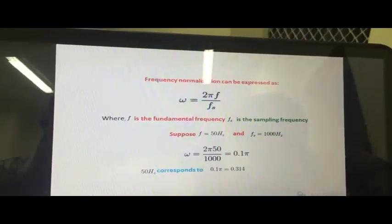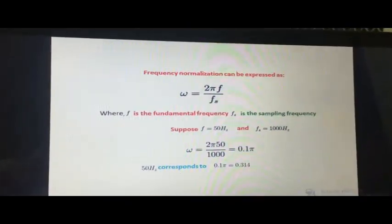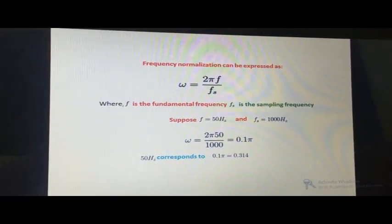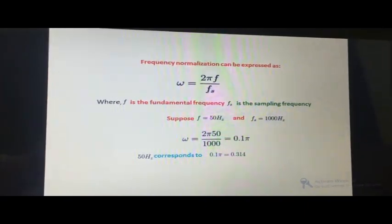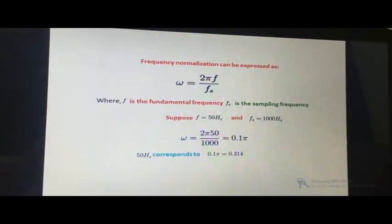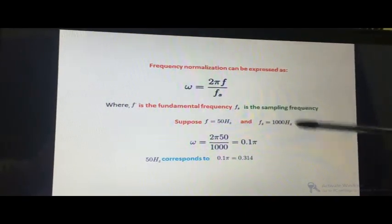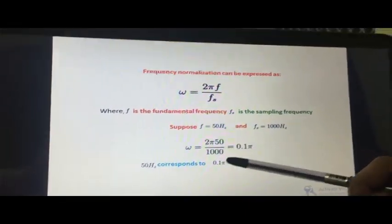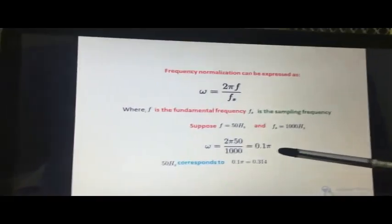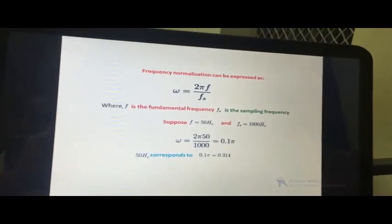The band occupancy for real-time implementation is between 0 to π. The procedure for frequency normalization is: omega, the angular frequency, can be expressed as 2πf divided by fs, where f is the fundamental frequency to be normalized and fs is the sampling frequency. In our application, f is equal to 50 hertz and we choose a sampling frequency of 1 kilohertz. Substituting these values: ω = 2π × 50 / 1000, giving 0.1π, or approximately 0.314 radians per second.